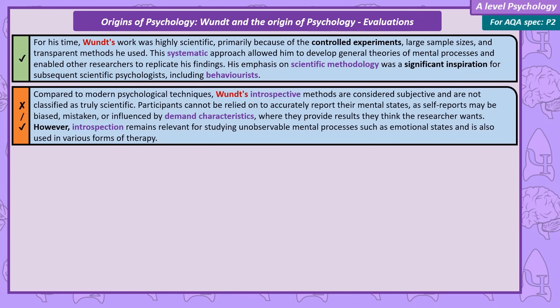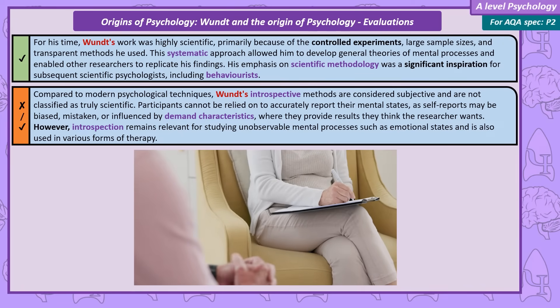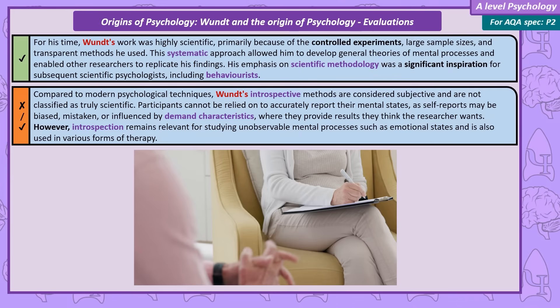However, compared to more modern psychological methods, Wundt's research is not classified as scientific, because of the subjective nature of his introspective methods. Participants can't be trusted to accurately report on their own mental states — it's likely those self-reports are biased, mistaken, or attempting to give Wundt the results they thought he wanted, an issue called demand characteristics. However, due to the difficulty of studying unobservable mental processes like emotional states, introspection is still used in some research and also in many forms of therapy.